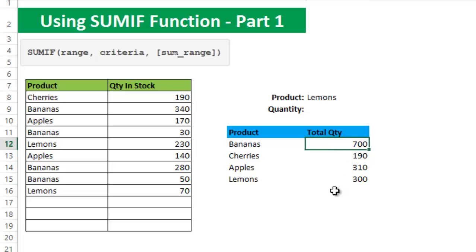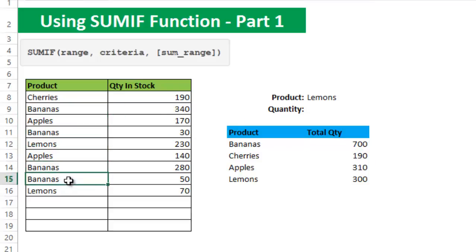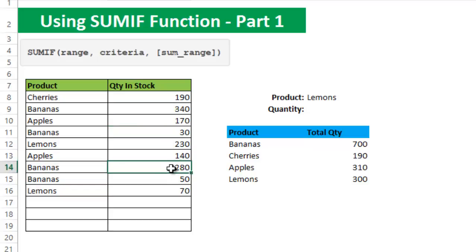Let's check to make sure the calculation is correct. For bananas, there are four records in the product table: 340 plus 30 is 370, plus 280 is 650, and plus 50 is 700 — which is correct.